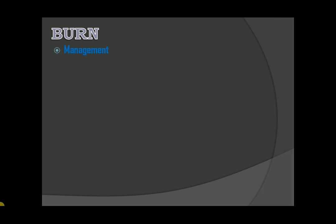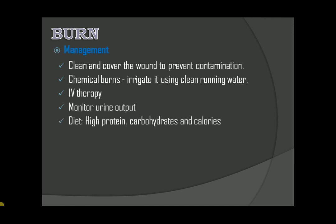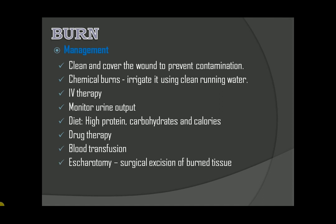Management: the primary goal is to protect the vital organs and to prevent hypovolemic shock. Clean and cover the wound to prevent contamination. For chemical burns, irrigate using clean running water. IV therapy for hydration and electrolyte replacement. Monitor urine output because it is the vital assessment for cardiac output and tissue perfusion. Diet: high protein, high carbohydrates, and high calories to promote wound healing and prevent infection. Drug therapy includes blood transfusion, escharotomy — which is the surgical excision of burned tissue — and skin grafting if necessary.